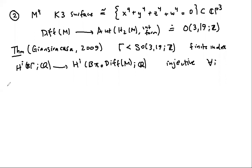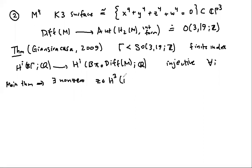Combining this with the main theorem tells you that there exist non-zero classes Z in degree three — since here p is three — in the cohomology of the classifying space of the mapping class group. So there's some interesting cohomology of the K3 mapping class group.